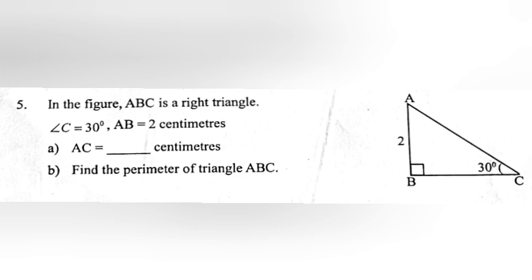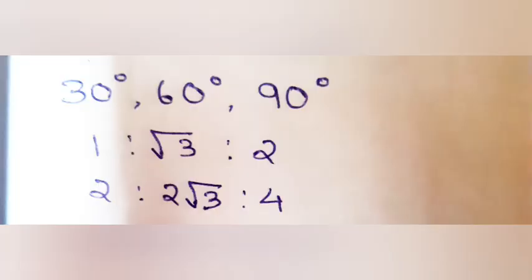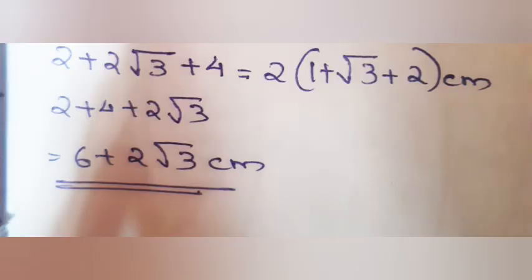Part B: Find the perimeter of triangle ABC. Answer: Angles are 30 degrees, 60 degrees, and 90 degrees. The ratio is 1 : √3 : 2, giving sides 2 : 2√3 : 4. Perimeter equals 2 plus 2√3 plus 4, which equals 6 plus 2√3 cm.